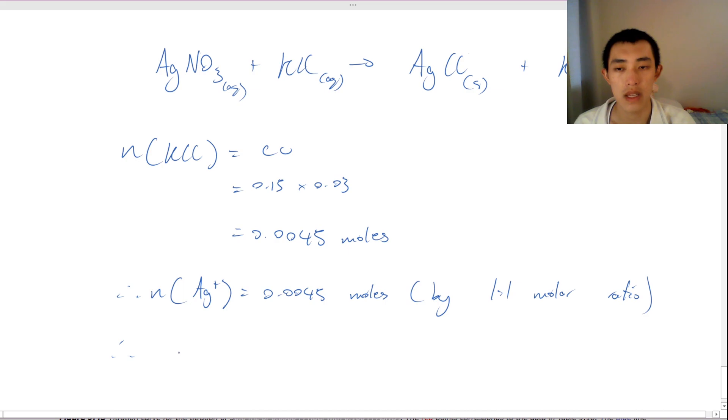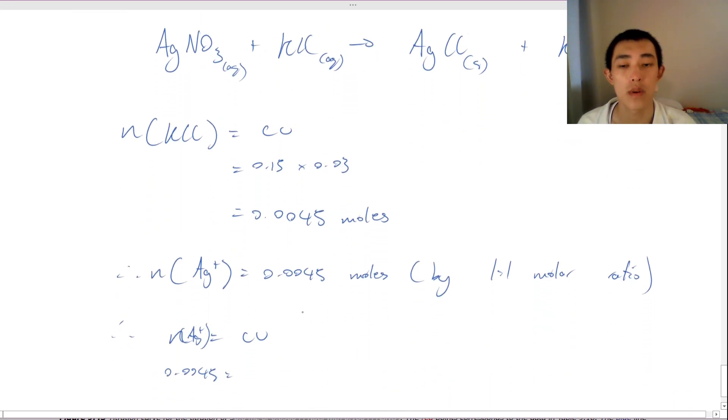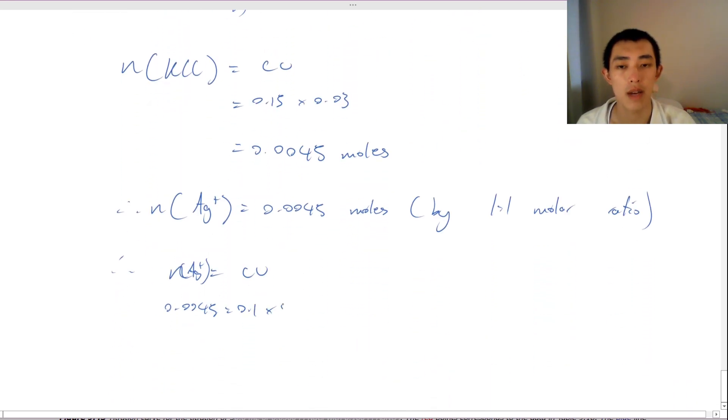So therefore I can say that moles equal to CV for my silver. So my 0.0045 is equal to the concentration, which is given as 0.1 times my volume. So my volume is equal to 0.045 liters or 45 milliliters.